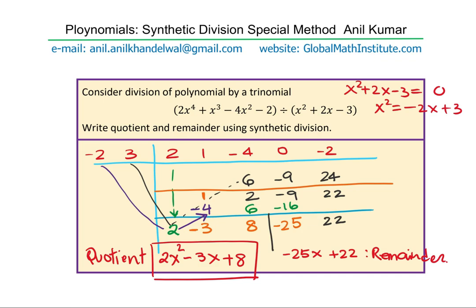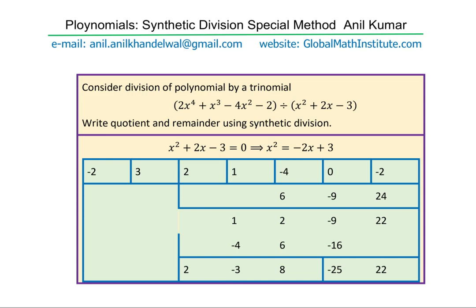Let me go over this once again with a typed solution. Here we have typed out the things. The first step is to consider the divisor itself. Divisor is x square plus 2x minus 3. If you equate to 0, then you can write x square as minus 2x plus 3. That gives you the two terms, minus 2 and 3, as the terms to divide the coefficients of the polynomial. Coefficients of the polynomial are written here with the placeholder 0 since that term was missing.